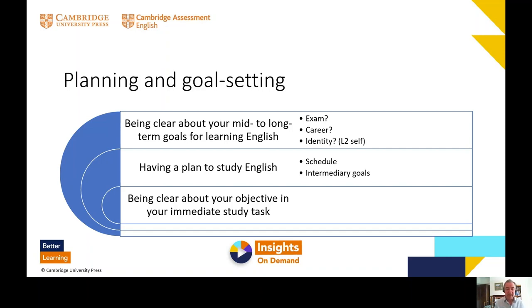There's also simply having a plan to study English, as straightforward as having a schedule — spending 15 minutes every day doing something. That relates to intermediary goals, such as learning 30 new words each week or spending 30 minutes listening to a podcast in English every week. And then being clear about the objective in your immediate study tasks — when you're doing a particular task, asking yourself: what's the point of this? Why am I doing this? What am I going to learn from it?